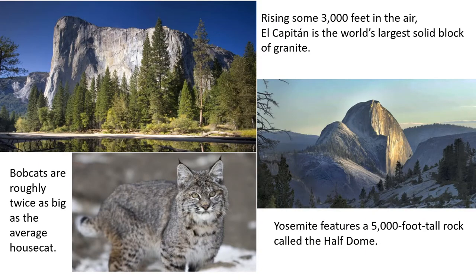Rising some 3,000 feet in the air, El Capitan is the world's largest solid block of granite. Yosemite features a 5,000-foot-tall rock called the Half Dome. Bobcats are roughly twice as big as the average house cat, and they also call Yosemite their home.